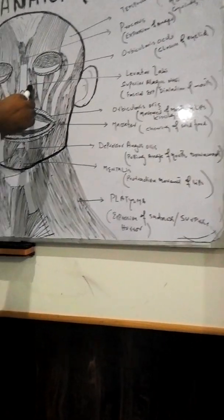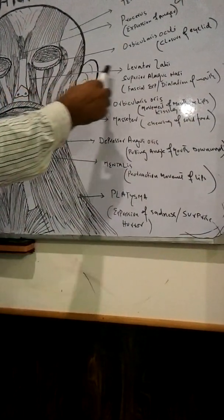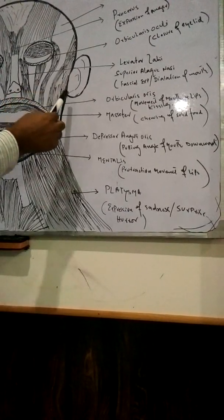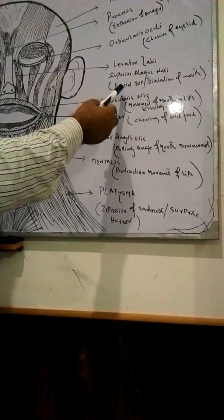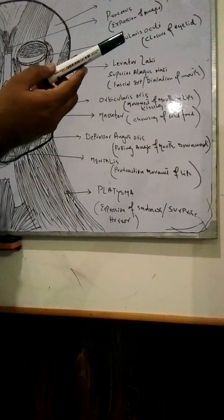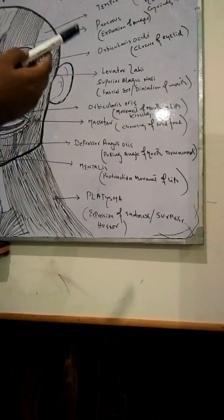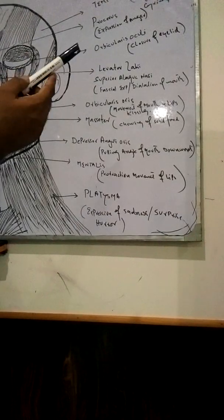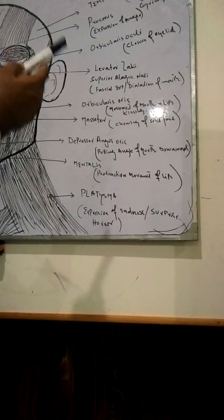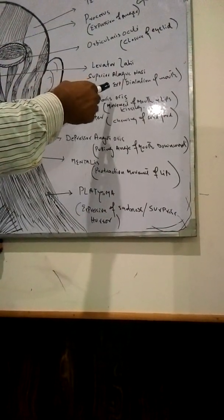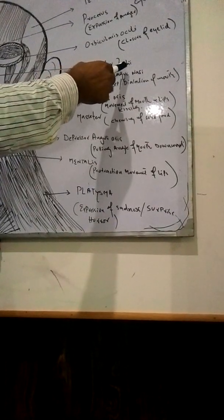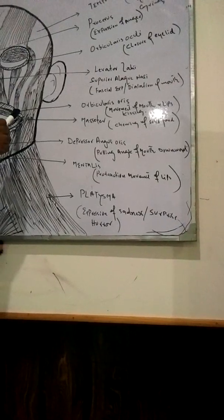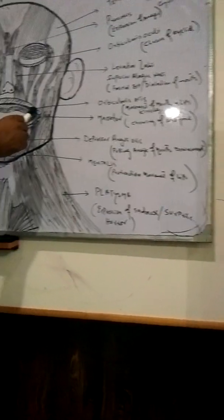Near the nose area, this muscle is called levator labii. The levator labii muscle especially expresses facial expressions and also helps in dilation of the mouth. If someone dilates the mouth or expresses anger, horror, or a smile, all these expressions are related to the levator labii.